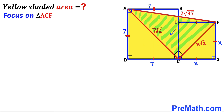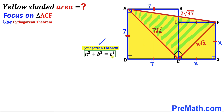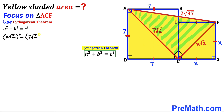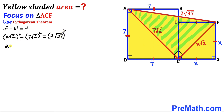We now focus on right triangle ACF and apply the Pythagorean theorem. The hypotenuse AF is 2 times square root of 37, while the two legs are 7√2 and X√2. Filling in the formula: (X√2)² + (7√2)² = (2√37)², which simplifies to 2X² + 98 = 148.